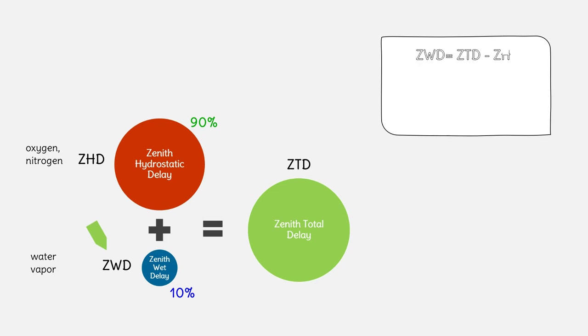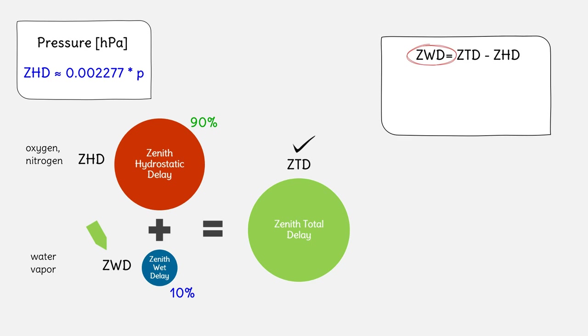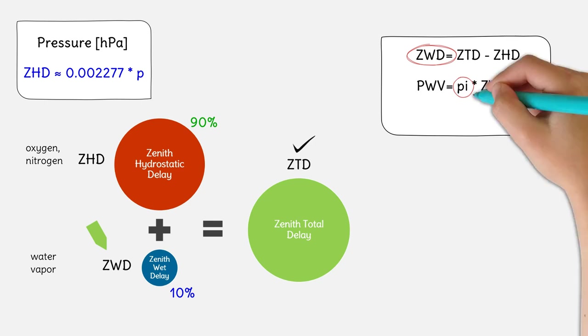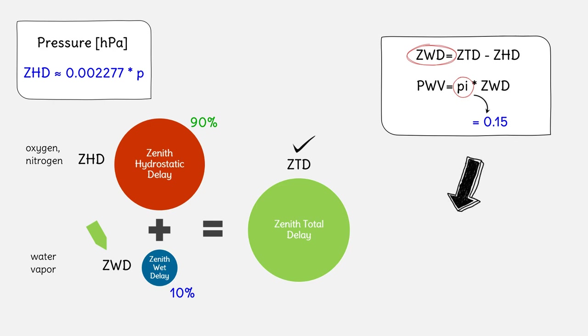Then ZWD equals the ZTD minus the ZHD. This is known, and given the measurement of the air pressure in hectopascal, the ZHD can be calculated from this formula. Then the ZWD is obtained, so it can be converted into PWV. The PWV equals π multiplied by the ZWD. π is an empirical constant that depends on the location of the GNSS antenna and the weather conditions. For simplicity, π can be set to 0.15. This means that 6.5 millimeters of the ZWD is equivalent to 1 millimeter of PWV.